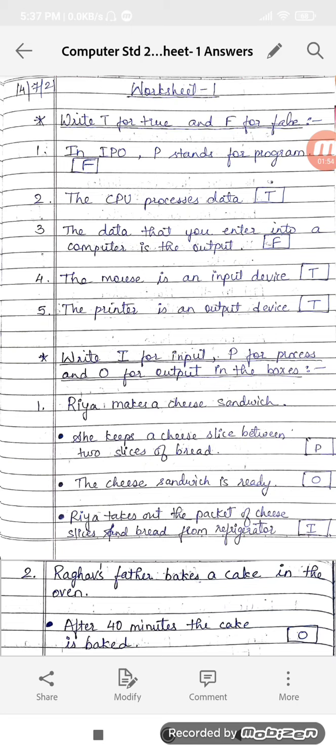Then, so write down I in the third one. Then what will it be? A process. She keeps the cheese slice between two slices of bread. That will be the process. So write down P in the box. And the last is output. The cheese sandwich is ready, so that is output. So write down O in the box.